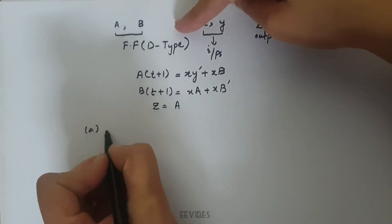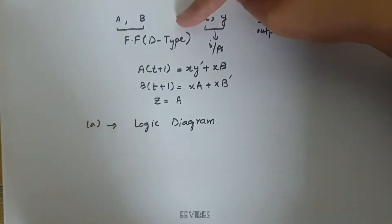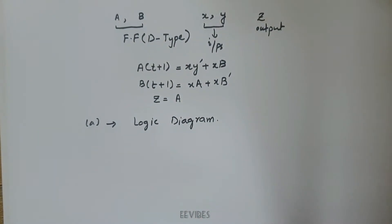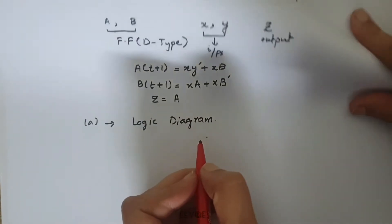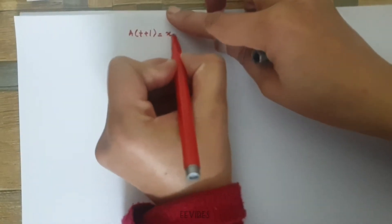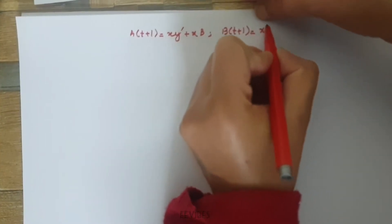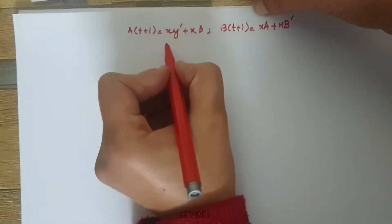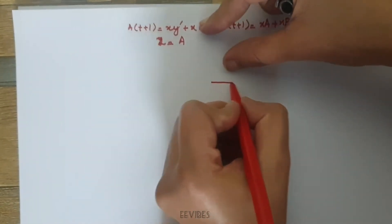The first part is to design or to draw the logic diagram of this circuitry. We need two flip-flops for that. We have to draw this for A(T+1) equal to XY complement plus X into B, and B(T+1) equal to XA plus X into B complement, and finally Z is equal to A. This logic diagram will be designed using two D type flip-flops.